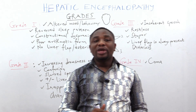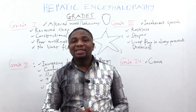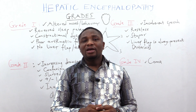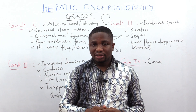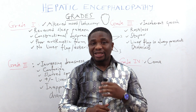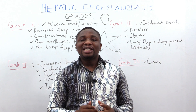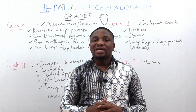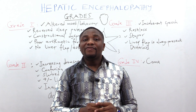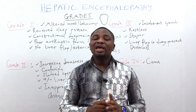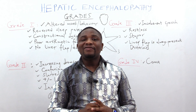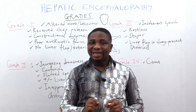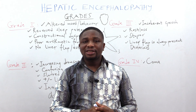Let's move ahead and look at Grade 3 hepatic encephalopathy. For Grade 3, the patient will be incoherent — when they are talking, their speech is incoherent. They will also be restless, and stupor is another feature. For Grade 3 hepatic encephalopathy, liver flap or asterixis is always present.